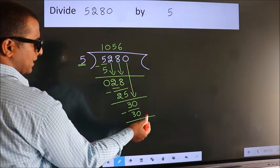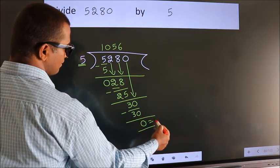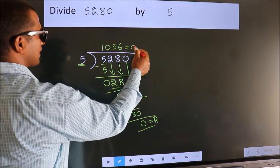No more numbers to bring down. So we stop here. This is our remainder. This is our quotient.